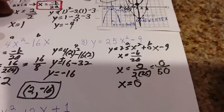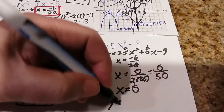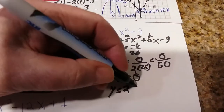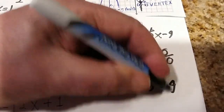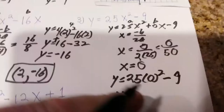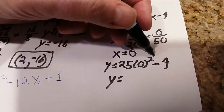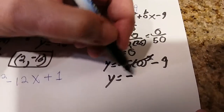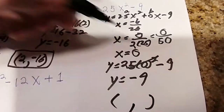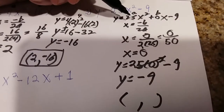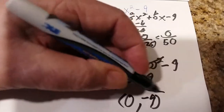Now substitute x = 0 into the original equation: 25(0²) - 9. Since 0 squared is 0, and 0 times any number is 0, that whole term disappears, leaving just -9. Don't forget to write the vertex as a coordinate: x is 0 and y is -9, so the vertex is (0, -9).